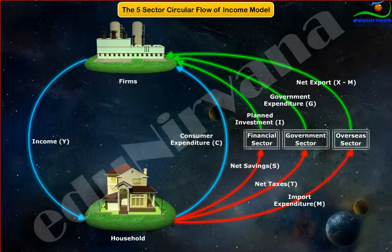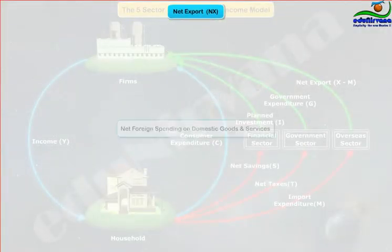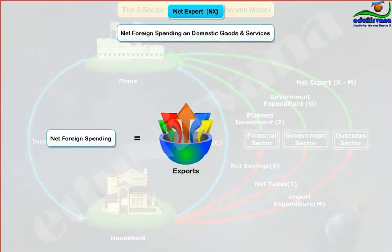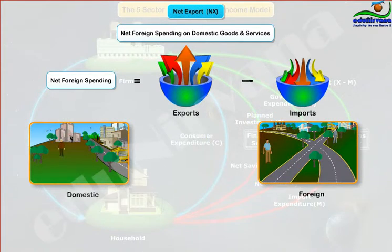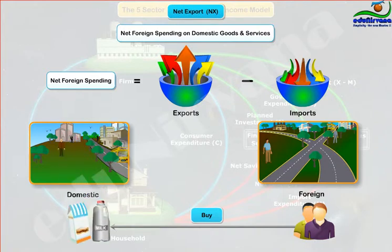Fourth, net exports (NX) — the net foreign spending on domestic goods and services, equal to exports minus imports. Precisely, the net spending done by foreign households in buying domestic goods and services.